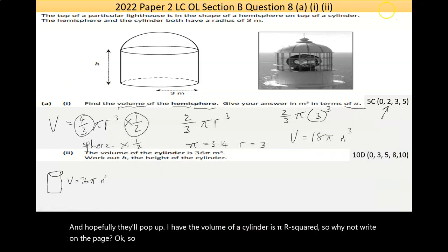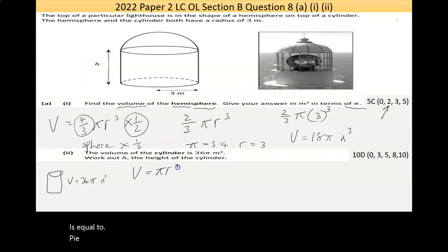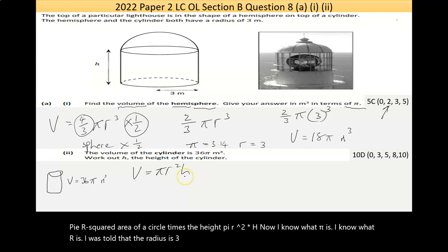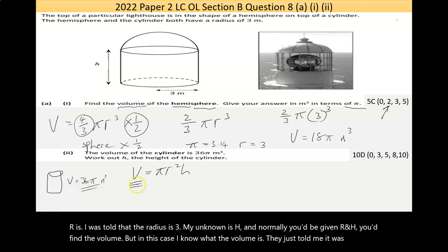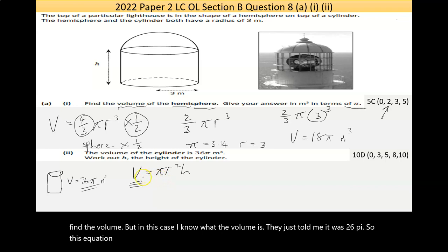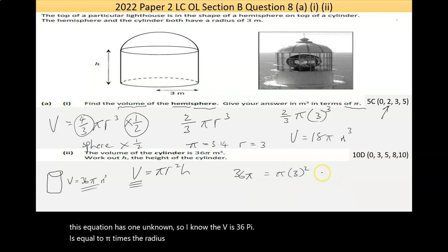So volume is equal to pi r squared, the area of a circle, times the height, pi r squared times h. Now, I know what pi is, I know what r is, I was told that the radius was 3, my unknown is h, and normally you'd be given r and h, you'd find the volume. In this case, I know what the volume is, they just told me it was 36 pi. So this equation has one unknown, so I know the v is 36 pi, is equal to pi times the radius squared times h. I don't know what h is. So there's only one unknown here. I need to solve this using algebra.